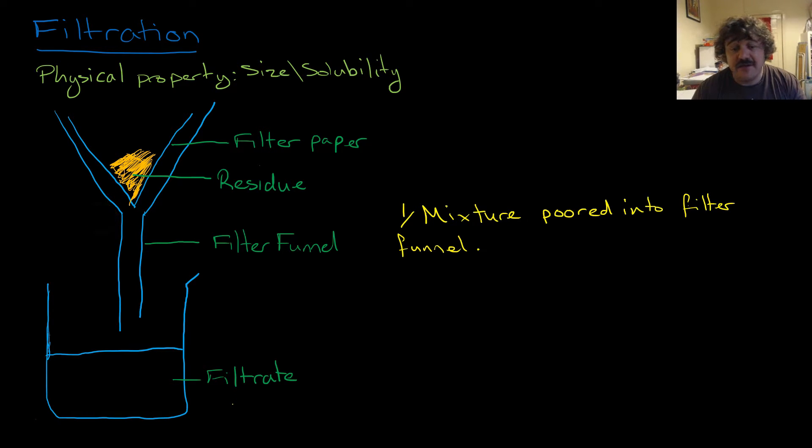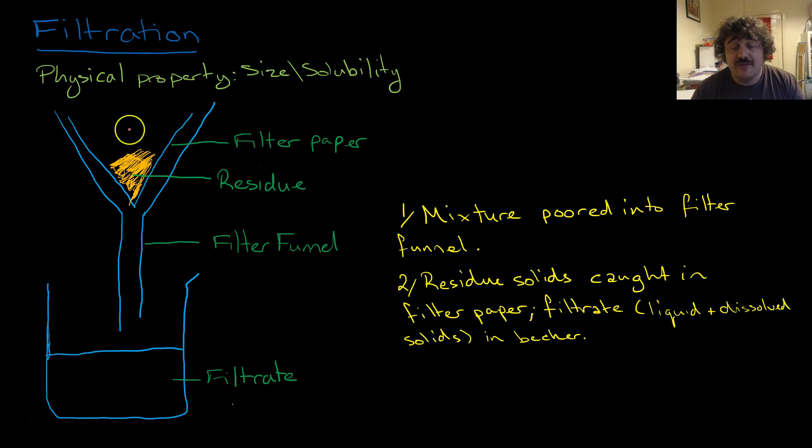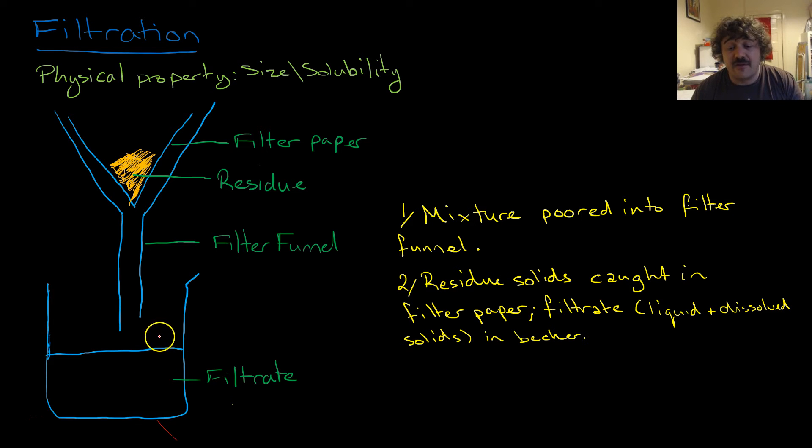So the mixture is poured into the filter funnel, which has filter paper already in it. And the residue, which is the solid part up here, is caught in the filter paper. The filtrate, which is the liquid down here, which goes through the filter paper, is caught in a beaker.